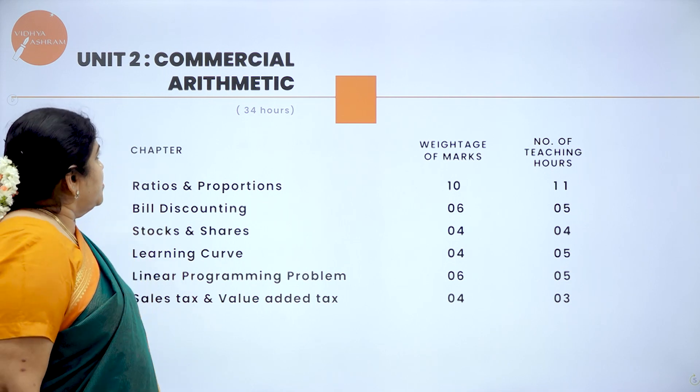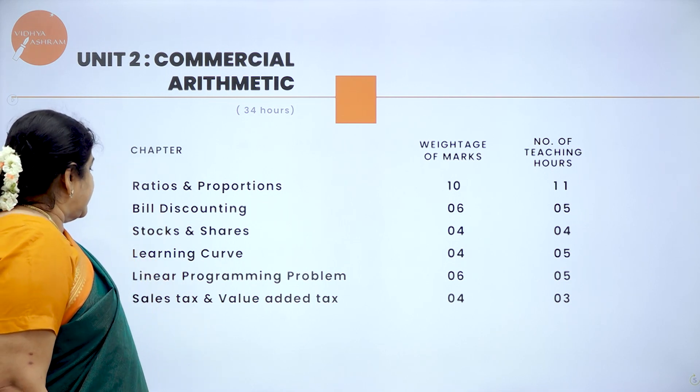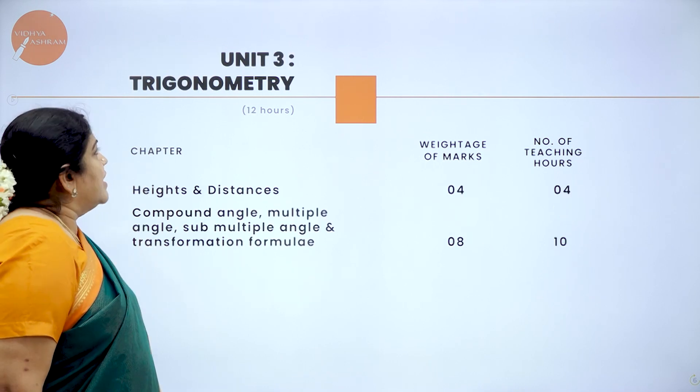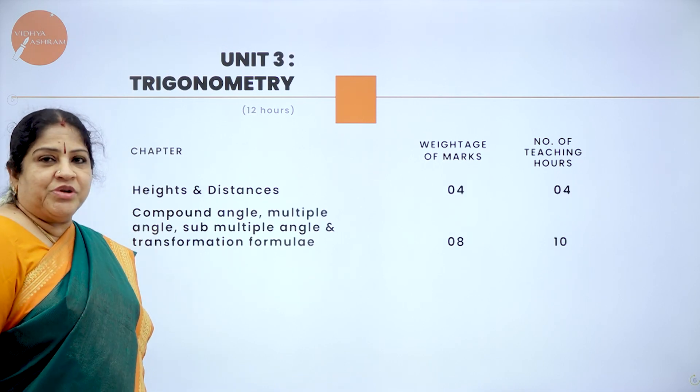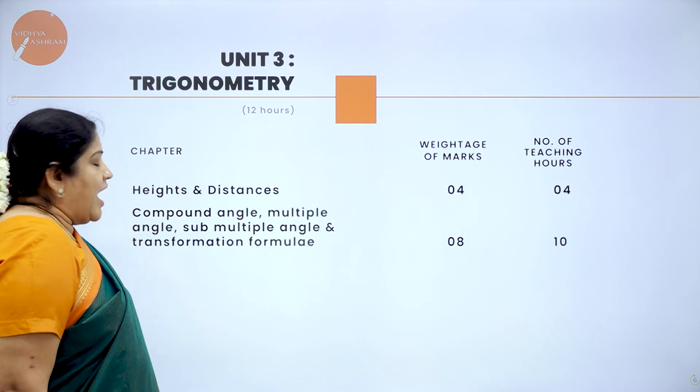Unit 2 is commercial arithmetic, which consists of around 6 chapters. Next is Unit 3, trigonometry.